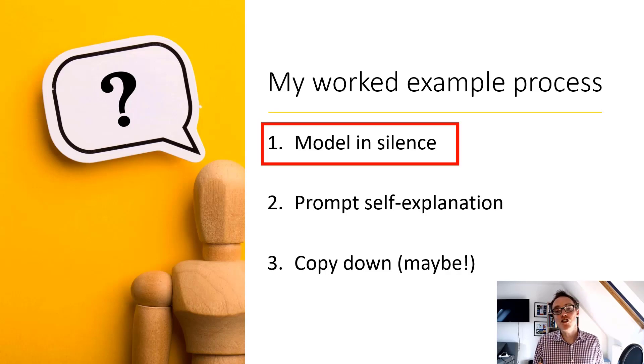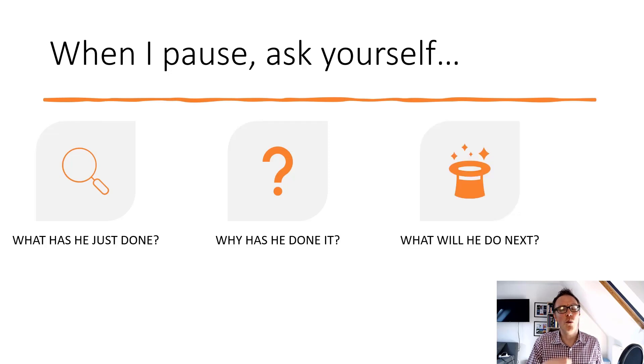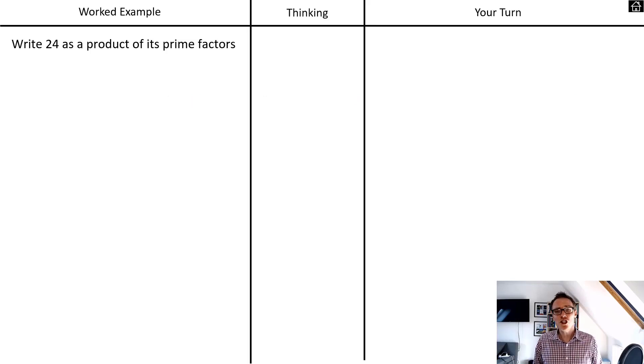There's a real danger that when we model something in silence, it can be a very passive experience for our students. They just watch something unfold in front of them. I don't want that to happen. I want my students thinking hard at all stages. So I give my students a challenge. I say that whilst I'm doing my silent modeling, I'm going to pause at key points. When I pause, I want you to ask yourself: what's he just done? Why has he done it? And what do I think he's going to do next? They don't have to write this down or tell anybody. It's just for them to be thinking in their heads. This prompts self-explanation that's going to be followed up in the second part of this process.